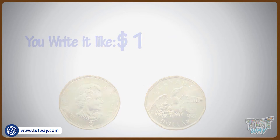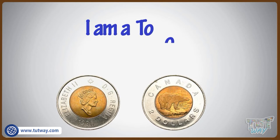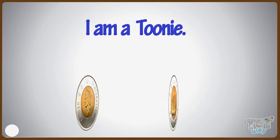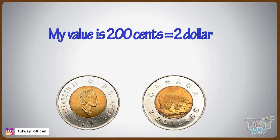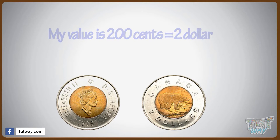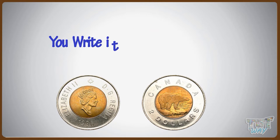I am a toonie. My value is two hundred cents, which is equal to two dollars. You write it like this.